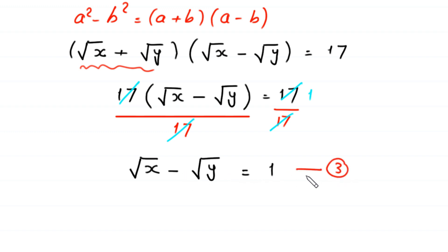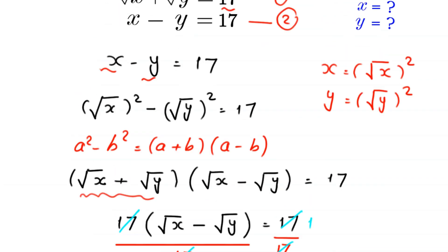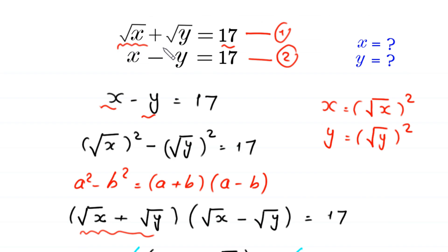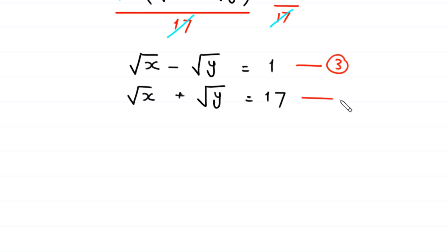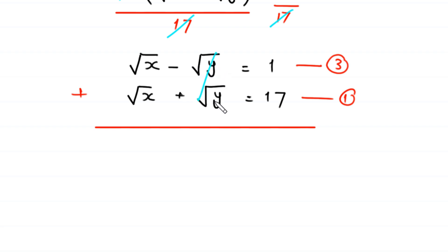Now we add equation 1 to equation 3. Equation 1 is square root of x plus square root of y equals 17. When we add the two equations, the negative square root of y cancels with the positive square root of y. We are left with 2 times square root of x equals 1 plus 17, which is 18.